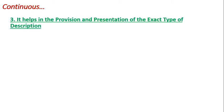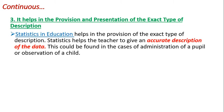Next, it helps in the provision and presentation of an exact type of description. Statistics helps the teacher give an accurate description of the data. This can be found in the case of administration of the pupil or observation of the child. By arranging data properly and systematically, then analyzing it, we can give a proper, accurate description. That is useful for the administration of pupils or the observation process — to observe students properly and help improve the teaching learning process.